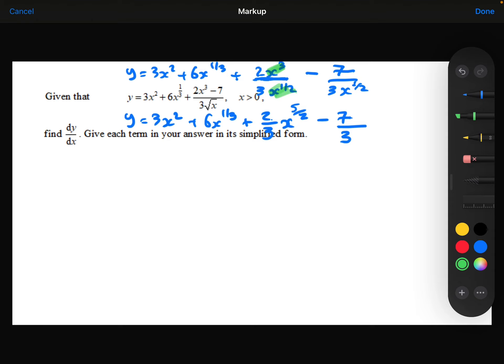And then this x to the power of a half on the denominator there, I'm going to move that to the numerator with a negative power. So that's going to be x to the power of minus 1 half.